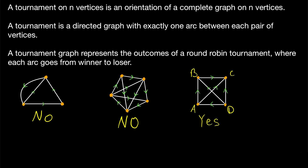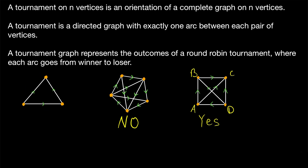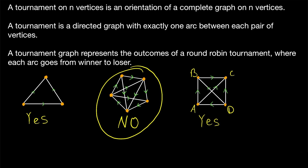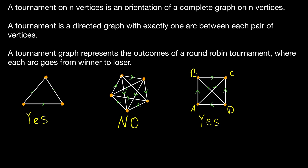Before we cover a couple other things, you might want to think about what we could do to those two non-example graphs to make them tournaments. For the first graph, all we would have to do is get rid of either one of the two directed edges — then we have a tournament. For the second graph, the problem was a missing directed edge, so we just add that edge in and pick a direction for it. Either direction works, and now that's a tournament too.